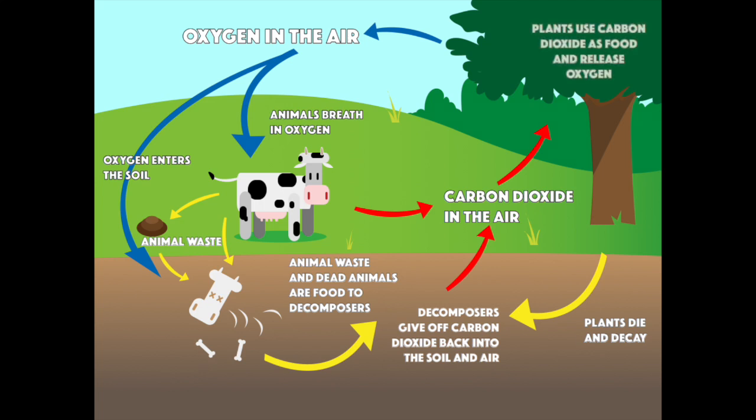This carbon dioxide that is released, as well as carbon dioxide given off by animal respiration, is food for plants. The plants, in turn, release oxygen back into the air. And the cycle continues.